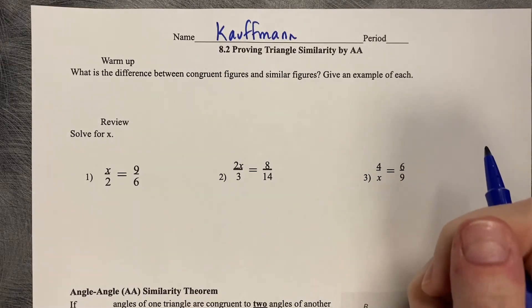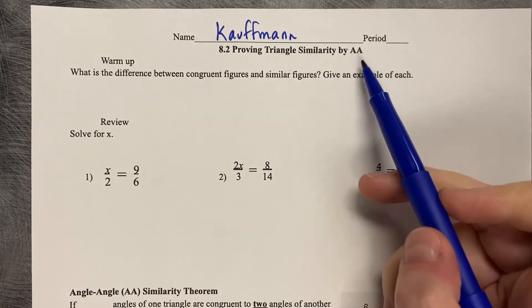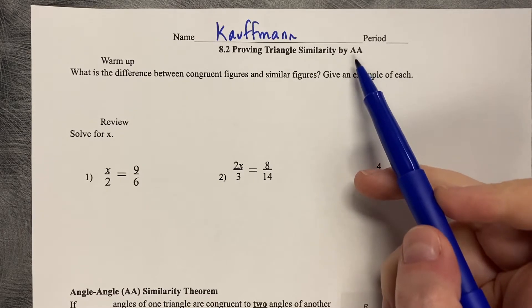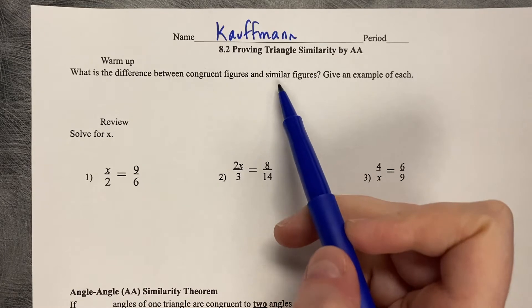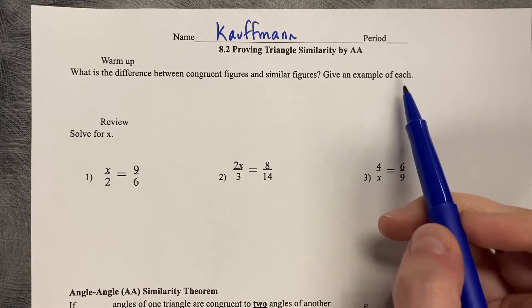8.2, Proving Triangle Similarity by Angle-Angle AA. What's the difference between congruent figures and similar figures? Give an example of each.